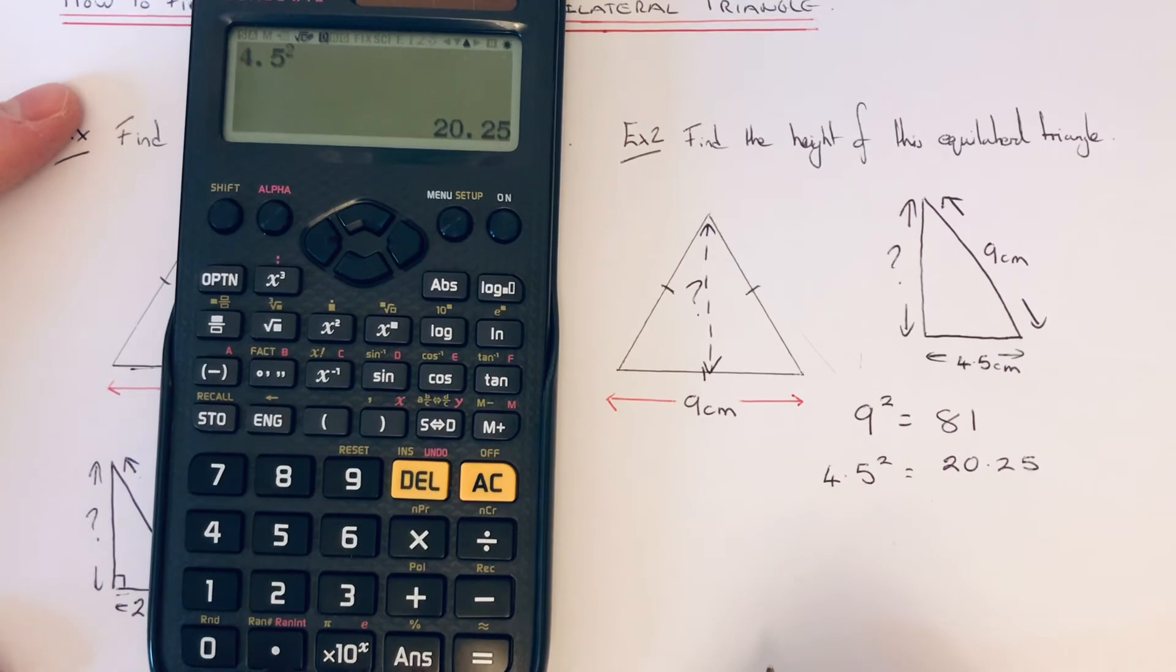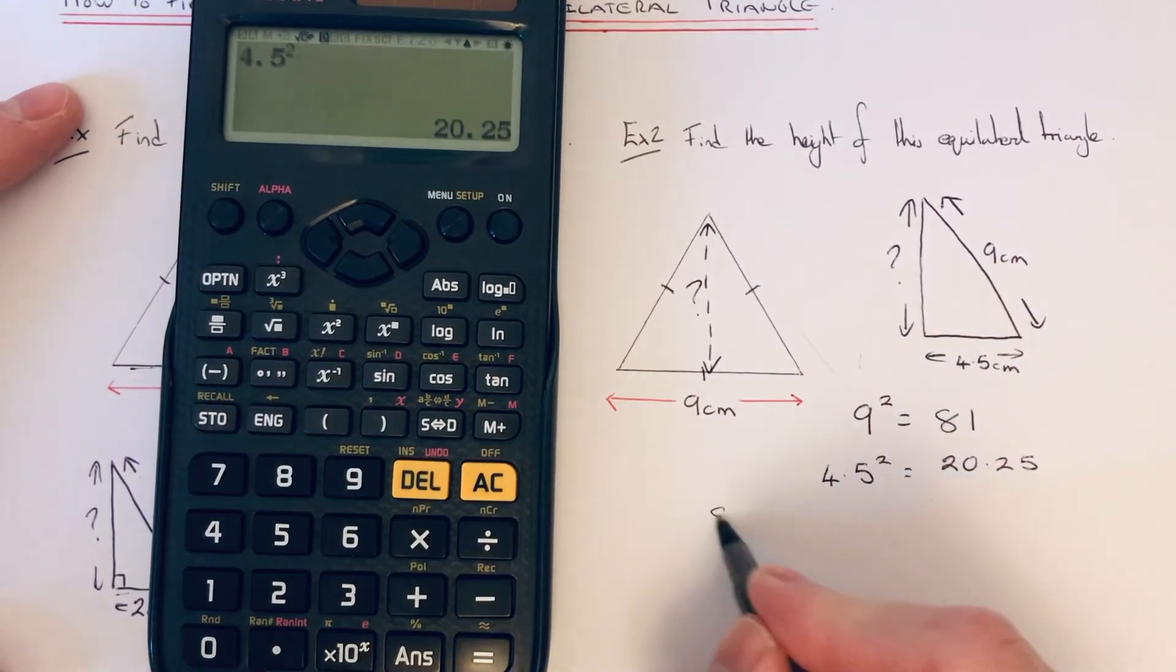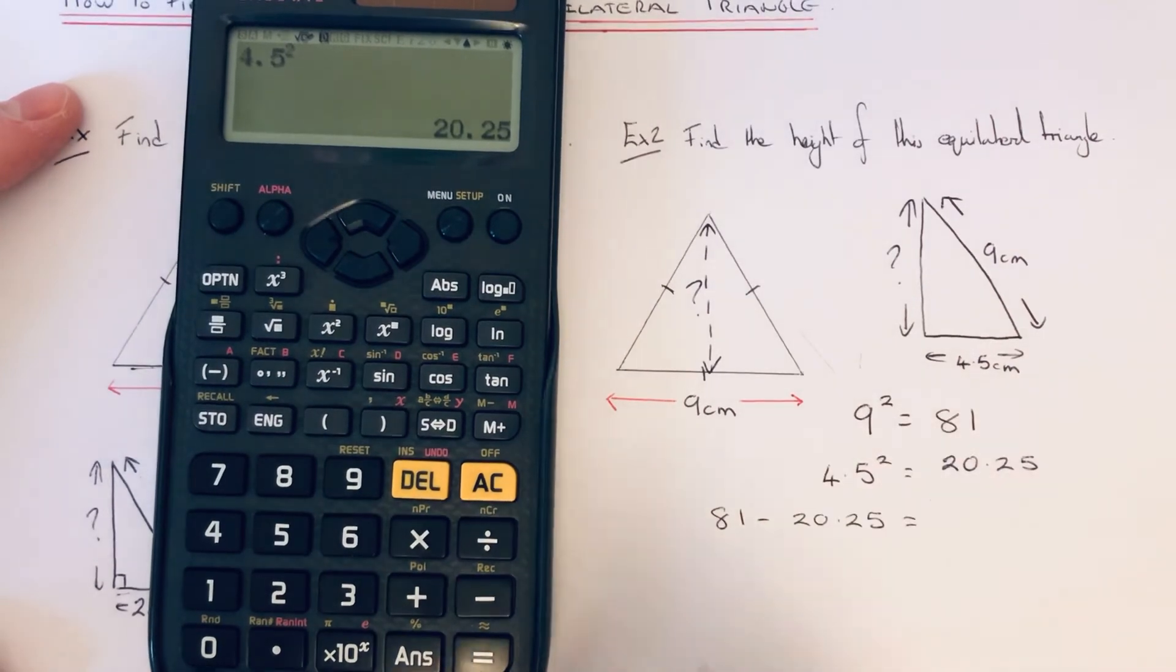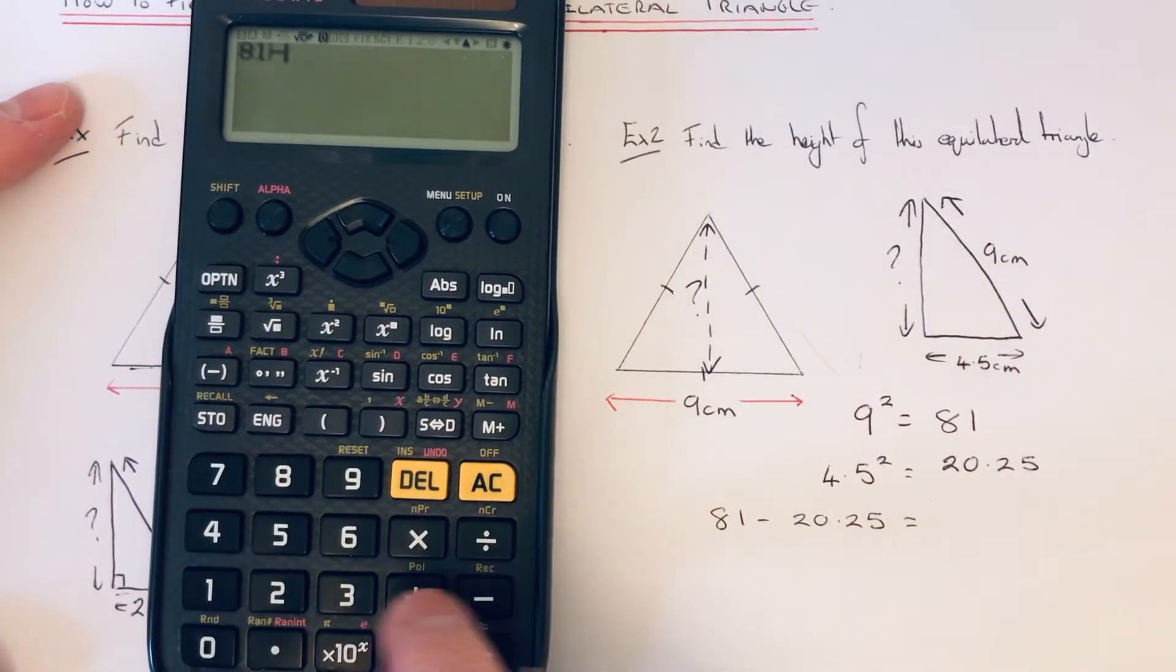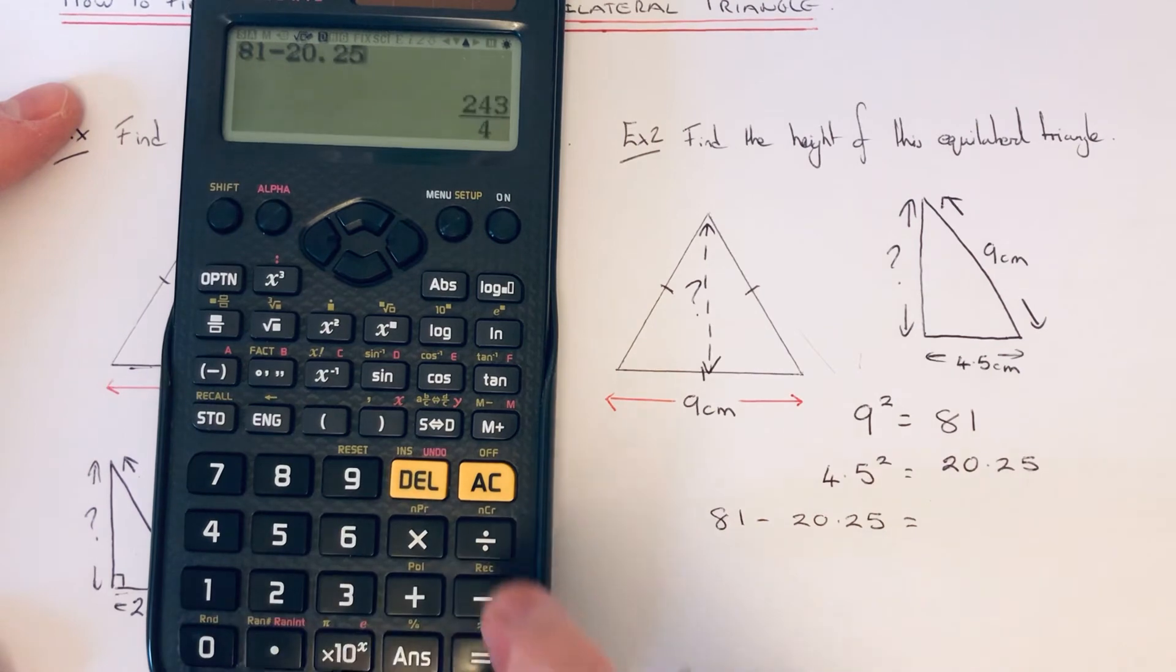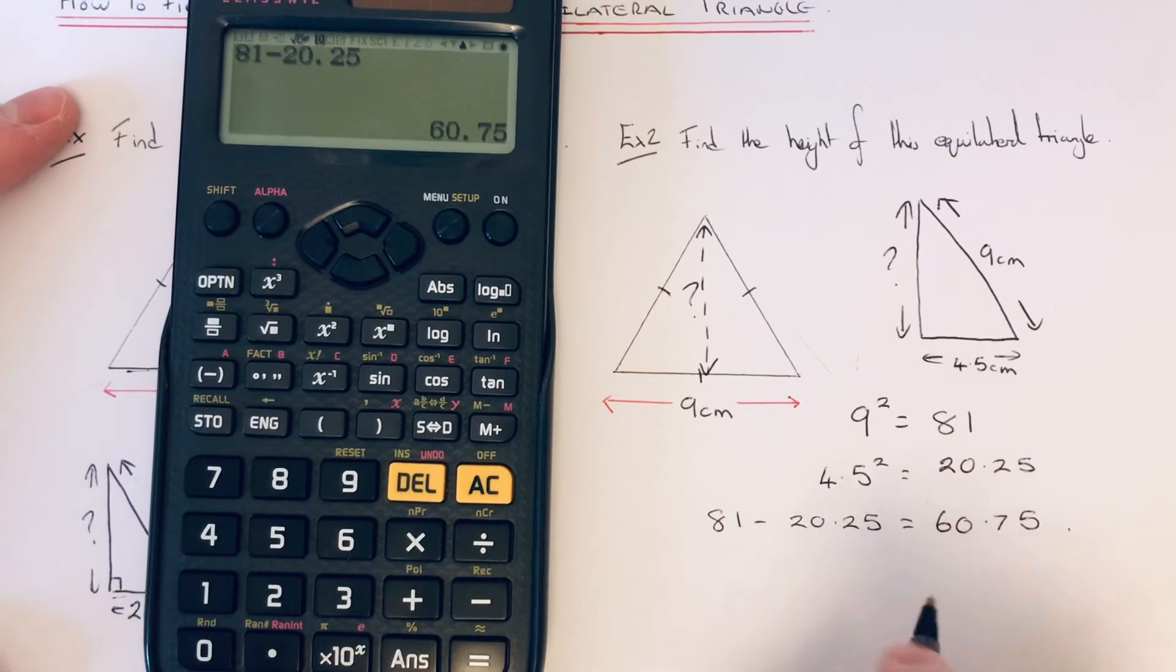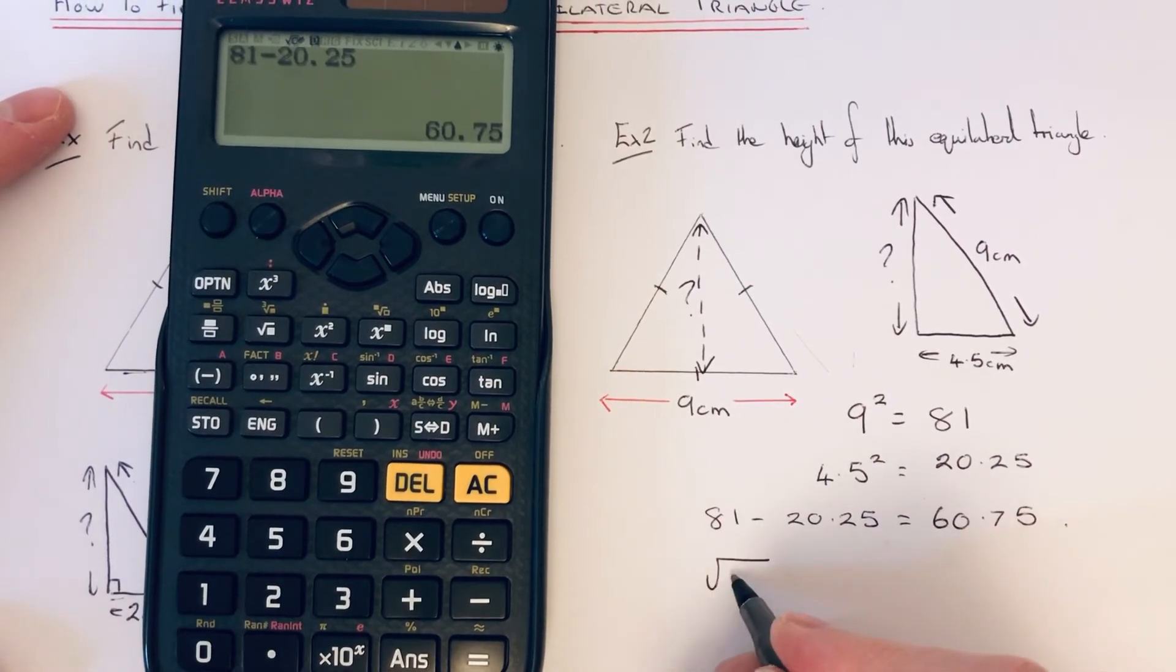So we are working out the shorter side, so again we take away the squares. So 81 take away 20.25 is 60.75, and don't forget to square root the answer.